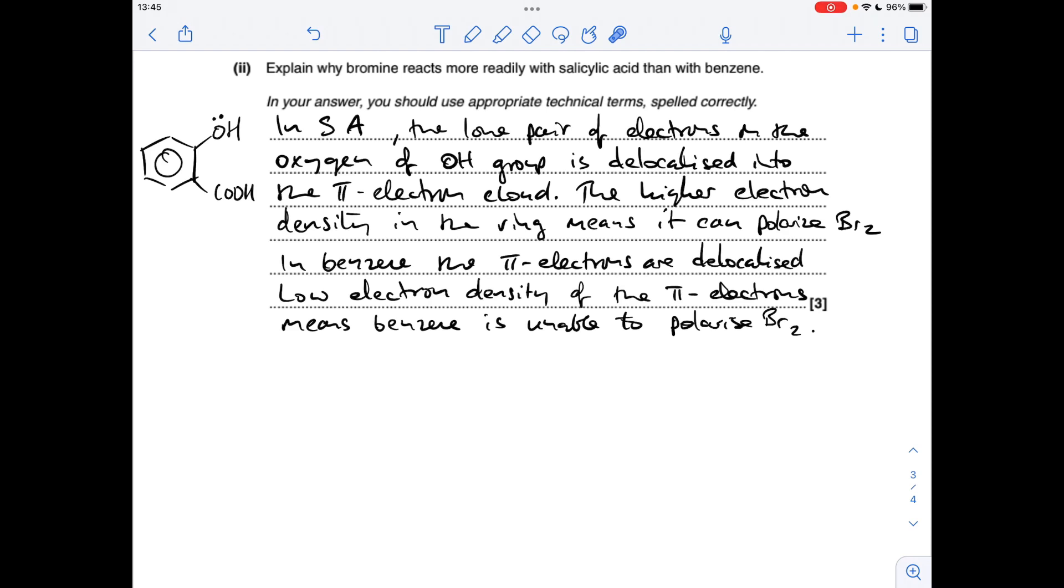In benzene obviously you don't have that, so you've just got the delocalised ring of pi electrons. Low electron density of the pi electrons means it can't polarise a bromine molecule.